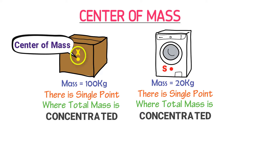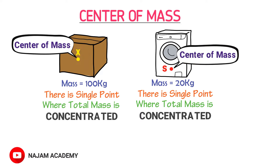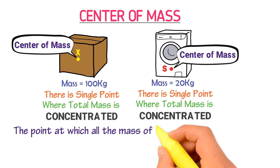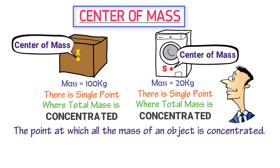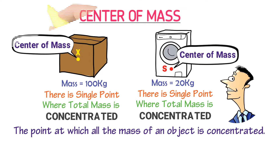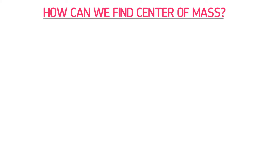We therefore call it center of mass. Similarly, we call point S the center of mass of this washing machine because the total mass of this washing machine appears or acts at that point. Thus, we define center of mass as the point at which all the mass of an object is concentrated, or the point about which mass is equally distributed in all directions. When you read or hear center of mass, think that it is the point where the total mass of the body appears to act.